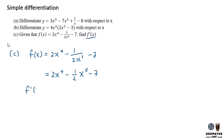To differentiate, write f prime x. We get 8x cubed here. Then negative 3 times negative 1 over 2 gives positive 3 over 2 x to the power of negative 4. Minus 7 differentiates to 0. Change back to original form: 8x cubed plus 3 over 2x to the power of 4. This is how you simply differentiate an equation.